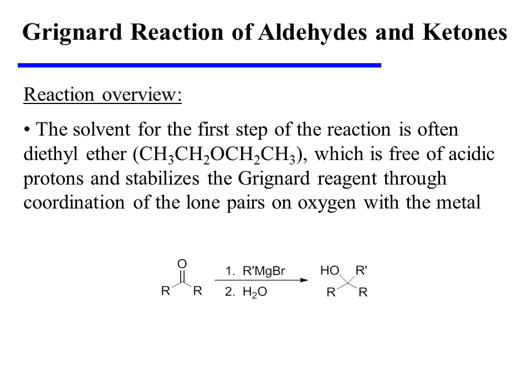The solvent for the first step of the reaction is often diethyl ether, which is free of acidic protons and stabilizes the Grignard reagent through coordination of the lone pairs on the ether oxygen with the metal.